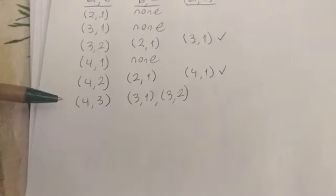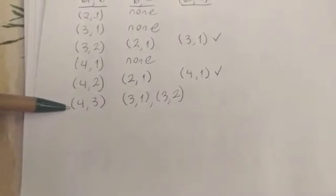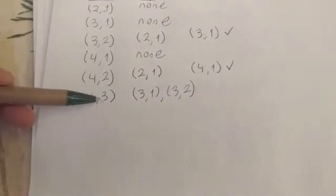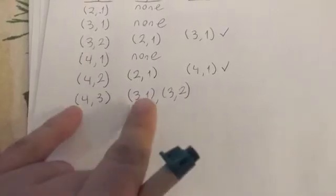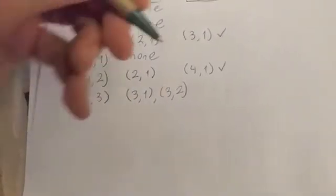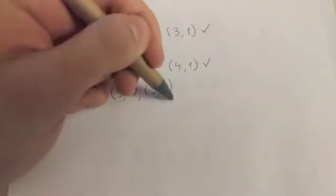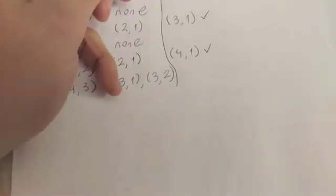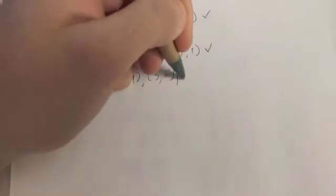Now we go on to our last one, (4,3). So (4,3), (3,1) makes (4,1). And just above here you see that there is in fact a (4,1). So (4,1).